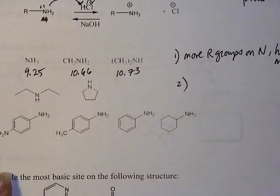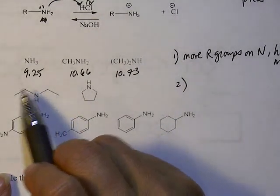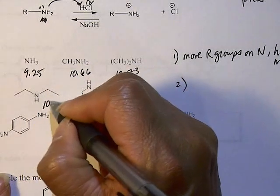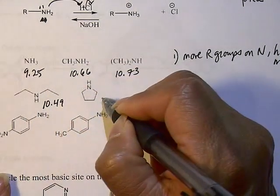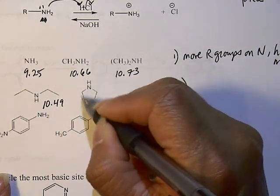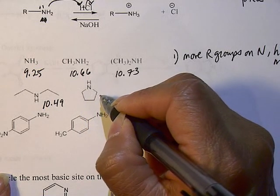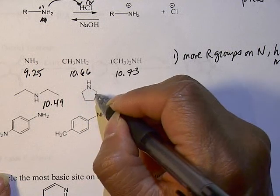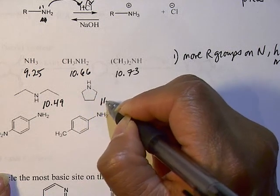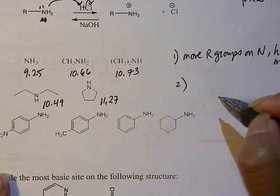All right. Second trend that you see is this diethylamine pKa is 10.49. But even though this is also substituted with two R groups, it's also substituted with two R groups, but in a cyclic manner, the pKa is 11.27.